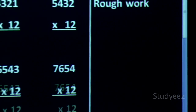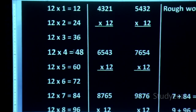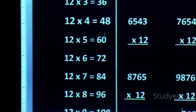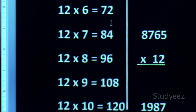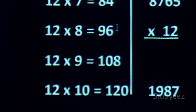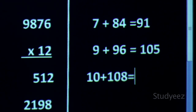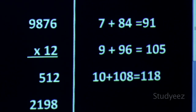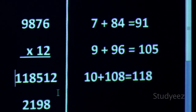For 12×9, you again go from the beginning: 12×1=12, 12×2=24, 12×3=36, 12×4=48, 12×5=60, 12×6=72, 12×7=84, 12×8=96, 12×9=108. Adding carry 10 plus 108 gives you 118. This is the way of learning the tables.